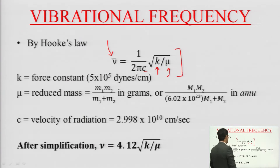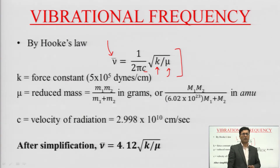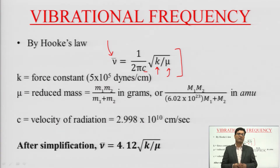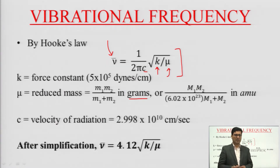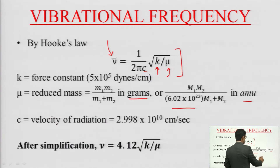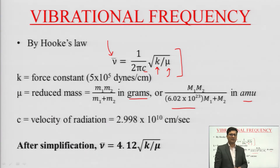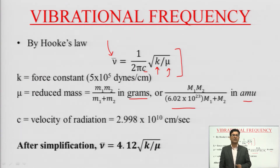The force constant value is generally expressed as 5×10⁵ dynes per centimeter for a single bond. Mu is the reduced mass, calculated as m1·m2 over (m1+m2), where weights are in grams. Since atomic mass units (amu) are used, we apply Avogadro's correction factor, making the equation: m1·m2 over (6.02×10²³ × (m1+m2)).